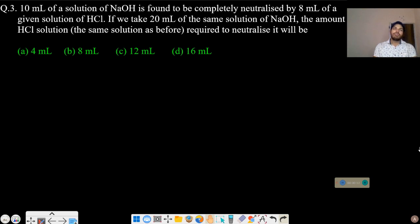10 ml of a solution of NaOH is found to be completely neutralized by 8 ml of a given solution of HCl. If we take 20 ml of same solution of NaOH, the amount of HCl, the same solution as before, required to neutralize it will be.